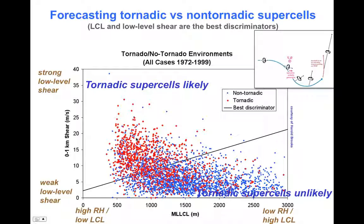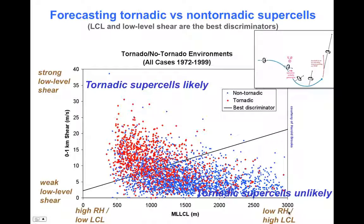Low LCLs and strong low-level shear are a big part of the story, but not a guarantee of tornadic supercells. There are a lot of other things potentially going on at small scales we can't observe. But the signal can be explained as being related to this need to match weak outflow, weak cold pools, and strong sucking. The ordinate is related to the sucking effect — as we go upward, we get stronger sucking. As we go from right to left, we have weaker cold pools, because cold pool strength is strongly modulated by the amount of evaporation, which is directly tied to LCL height and environmental relative humidity.